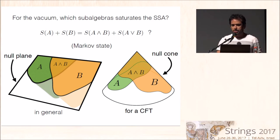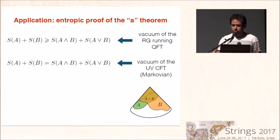So this Markov property has other interesting consequences in quantum field theory that we are working on now. But for the moment, we have applied it to obtain the entropic proof of the A theorem.